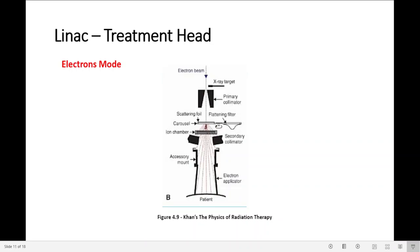Here we are in the electrons mode. In the electron mode, the x-ray target is moving out of the way. We are treating with electrons, we don't need x-ray production. Remember that the electrons emerging from the exit window of the accelerator tube are in the form of a pencil beam of about three millimeters in diameter. As a pencil beam, it passes through the primary collimator.